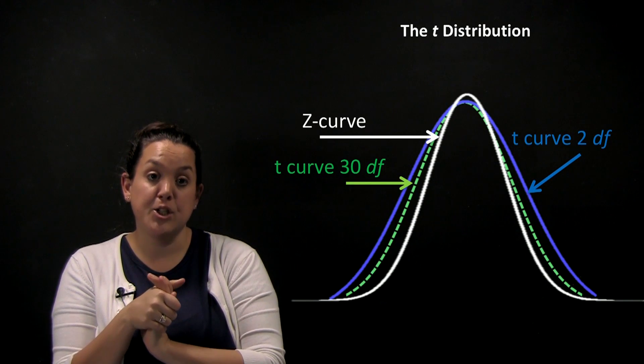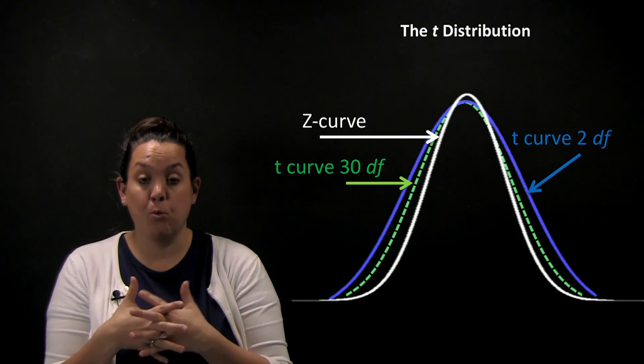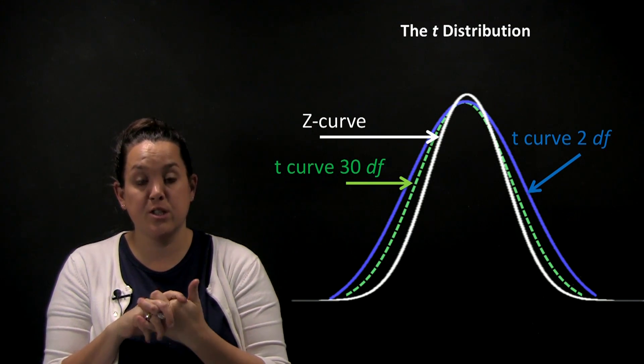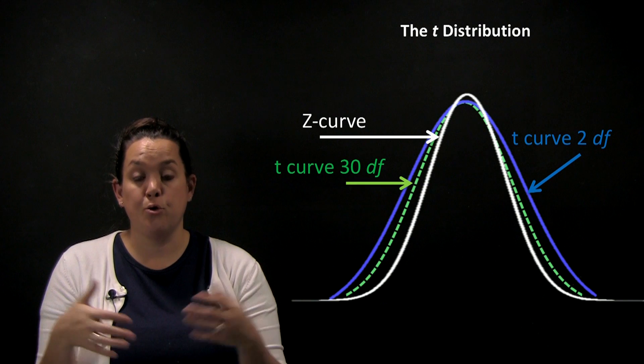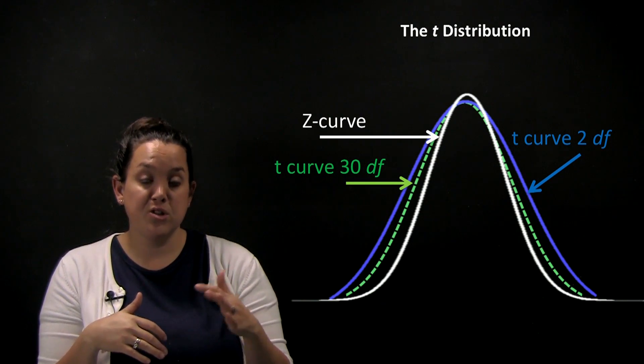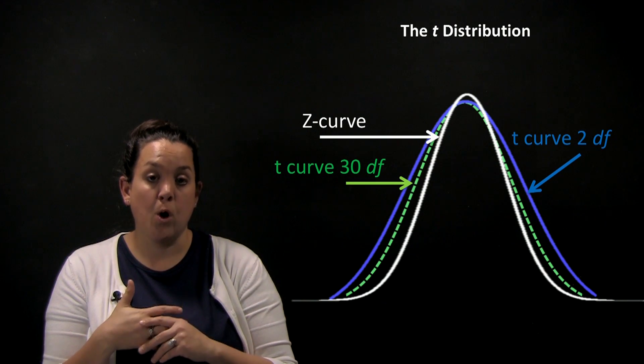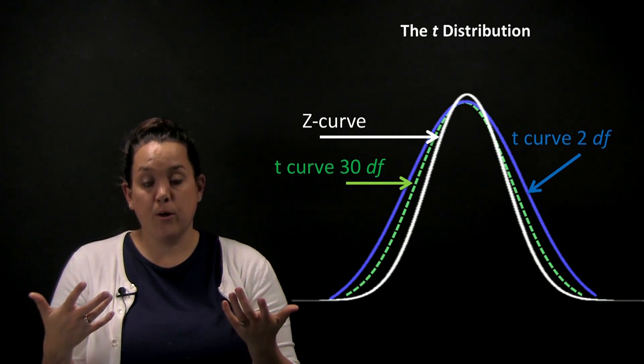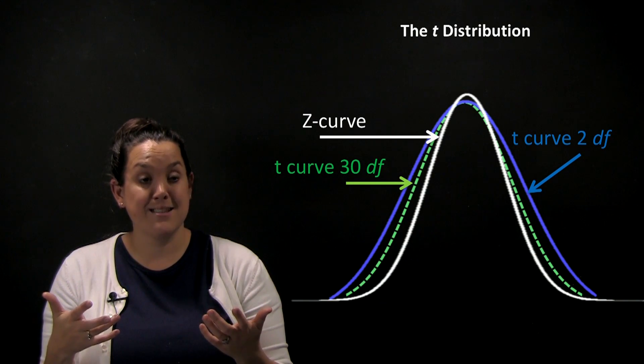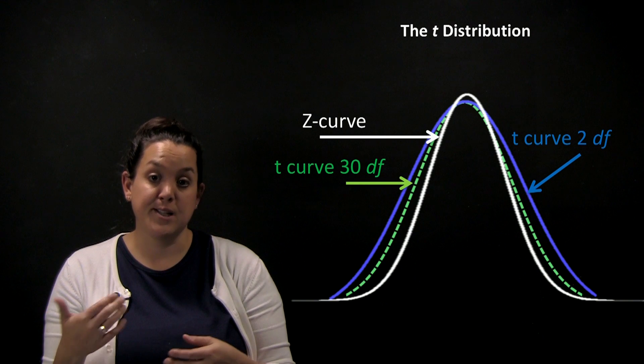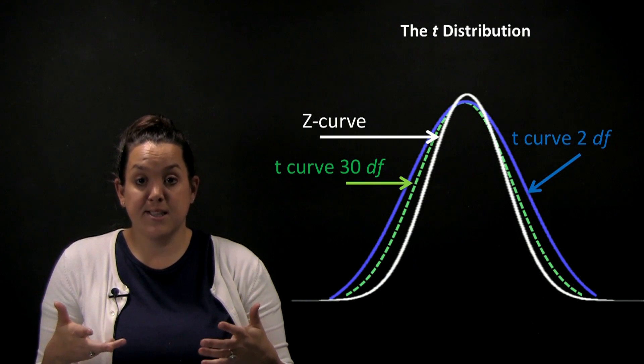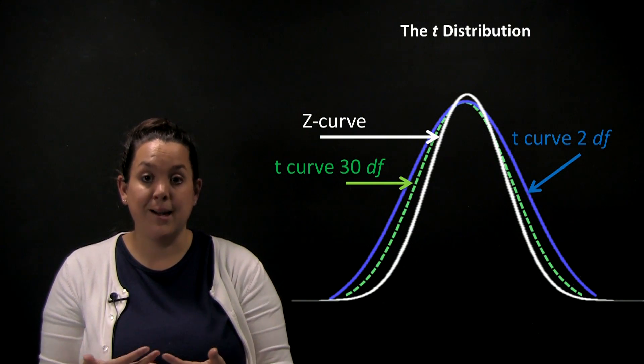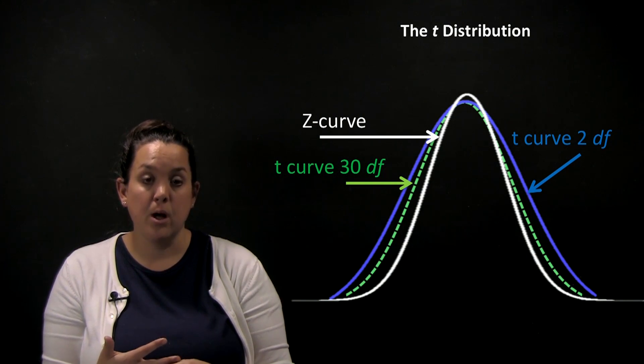Today we're going to continue our discussion on a confidence interval for one population mean, which is calculating an interval that hopefully contains mu, our new parameter of interest. We're still in the chapter of analysis of one quantitative variable, and we're looking at our first form of statistical inference, which is taking a sample to make an inference on a population. We're going to be using sample information to create an interval that mu is contained within.